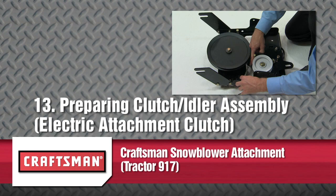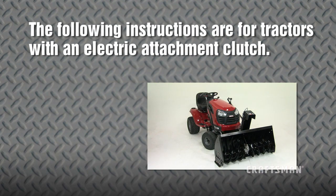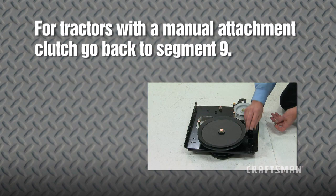This segment will show you how to prepare the clutch idler assembly for a tractor with an electric attachment clutch. Please note, these instructions are for tractors with an electric attachment clutch, so if you have a manual attachment clutch, go back to segment 9.